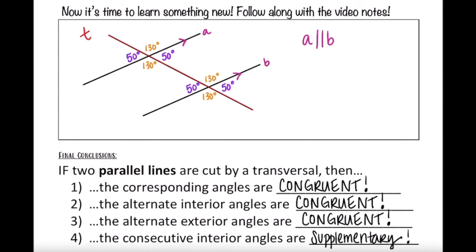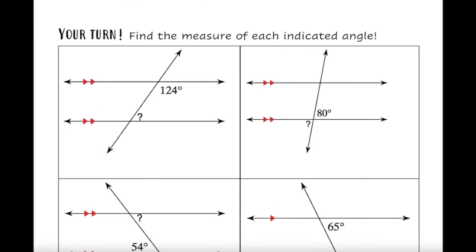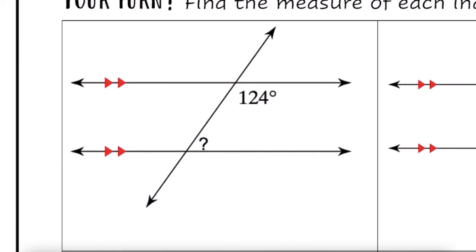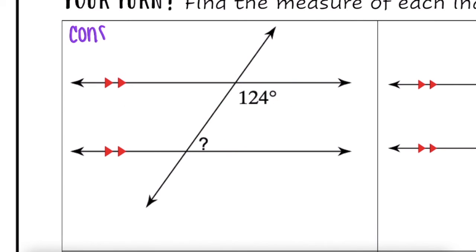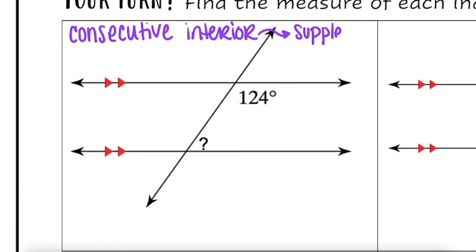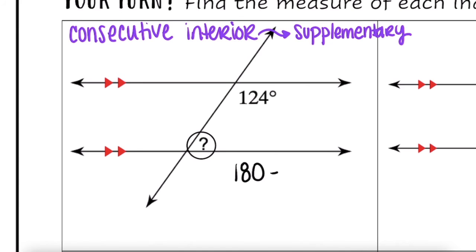Your turn — find the measure of each indicated angle. For the first one, the angles are on the same side of the transversal and inside the parallel lines, so these are consecutive interior angles. When lines are parallel, consecutive interior angles are supplementary, meaning they add up to 180 degrees. So we do 180 minus 124, giving us a missing angle measure of 56 degrees.